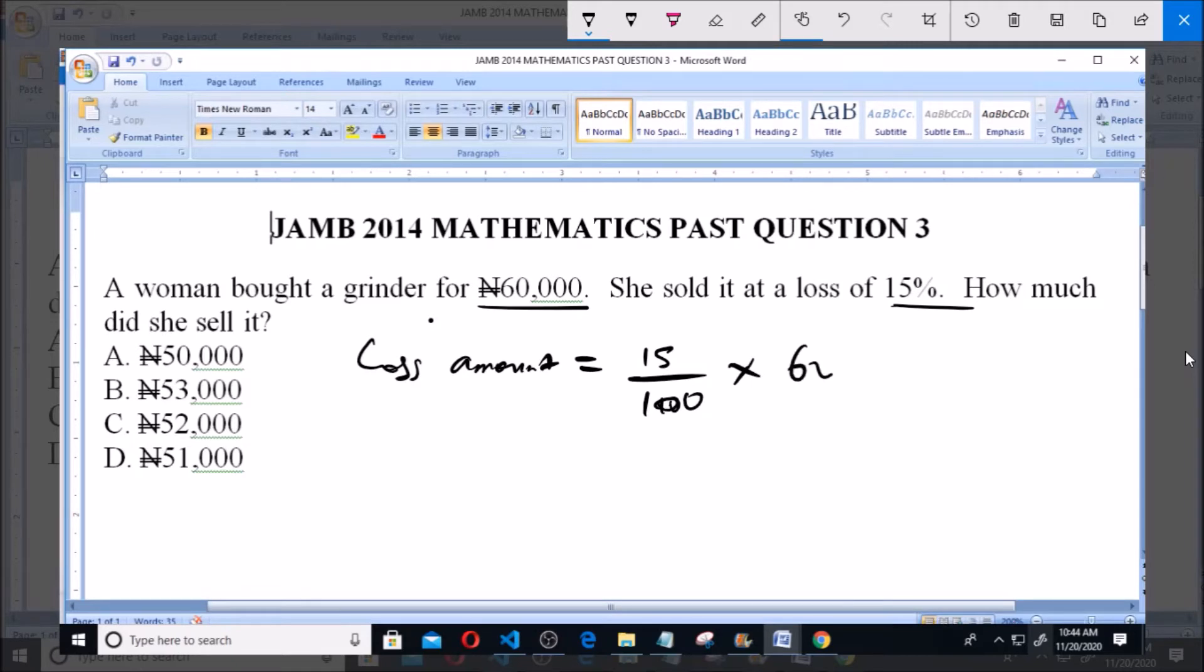The amount is 60,000 naira. So we have 15/100 multiplied by 60,000. We cancel the zeros—the zeros here cancel, then 15 times 600 equals 9,000 naira.